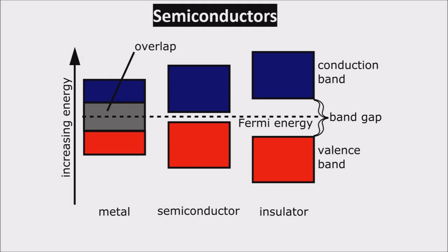But we have some elements whose behaviour is in the middle between insulators and conductors. They are called semiconductors. These elements have a little gap, and at room temperature some few electrons have enough energy to jump to the conduction band, so these elements are slightly conductive. If we raise temperature, we free more electrons and improve conductivity. These elements can behave like insulators at zero kelvins and like conductors at high temperature, and we can control their conductivity.